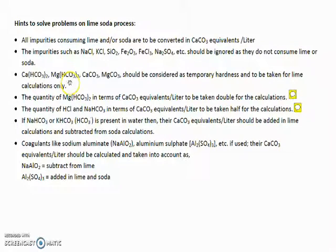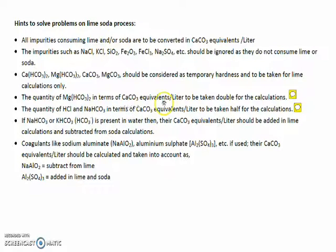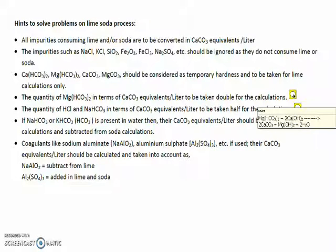Calcium bicarbonate, magnesium bicarbonate, calcium carbonate, and magnesium carbonate should be considered as temporary hardness producing salts and taken for lime calculations only, because such salts react only with lime. The quantity of magnesium bicarbonate in terms of CaCO₃ equivalents per liter is to be taken double for calculations, because one molecule of magnesium bicarbonate requires two molecules of calcium hydroxide (lime) to convert into precipitated form.